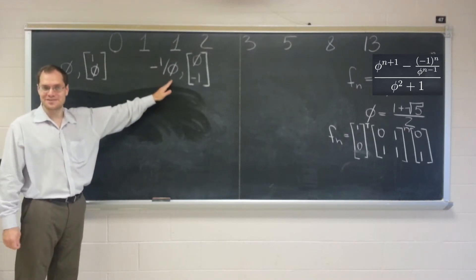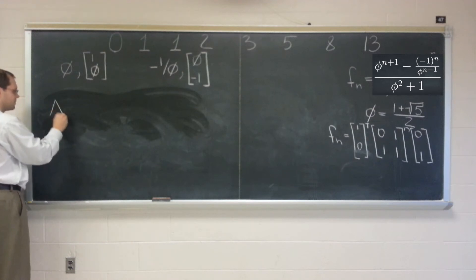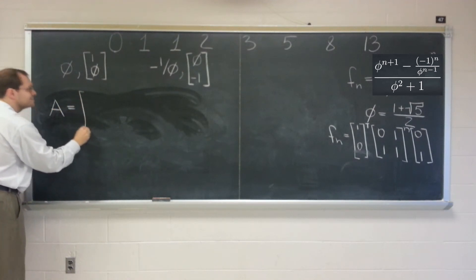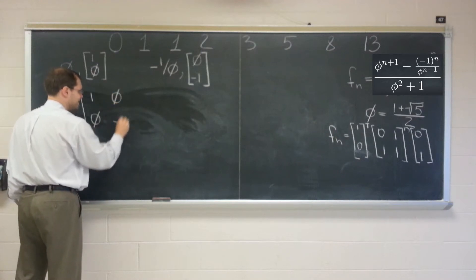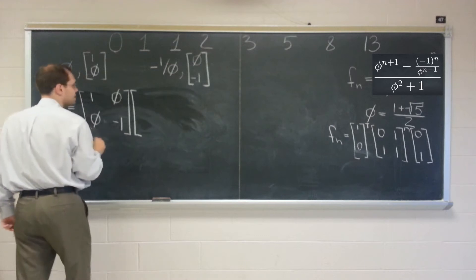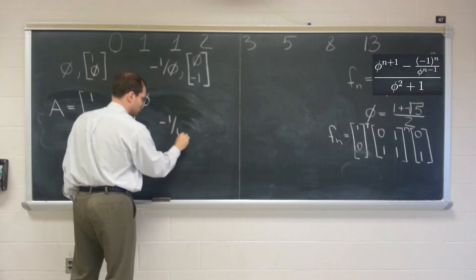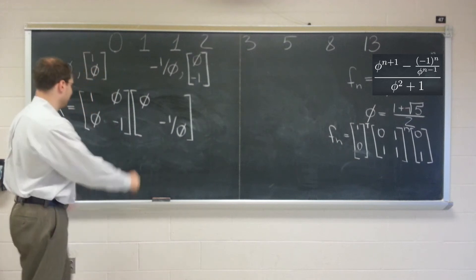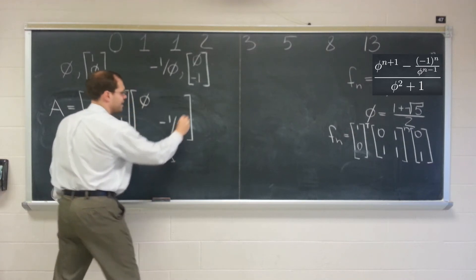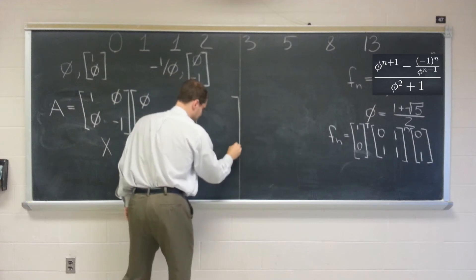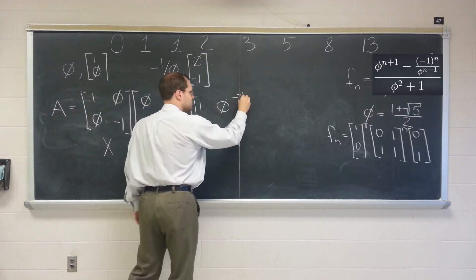Now we have the eigenvalues and eigenvectors, so we can pretty much write the eigenvalue decomposition of the matrix A, and even raise it to the nth power. So A equals, let's see, 1 over phi, excuse me, 1, phi, phi, negative 1, times the eigenvalues on the diagonal, phi, negative 1 over phi, and the inverse of this matrix. So this is x, this is lambda, and here comes x inverse. So this will be our task to compute x inverse. For now, I will just write x itself, phi minus 1, and then I'll say that we need to invert it.